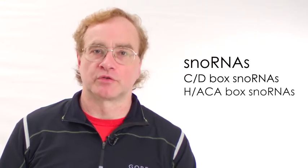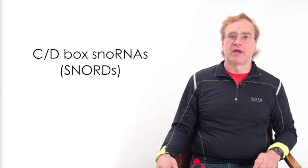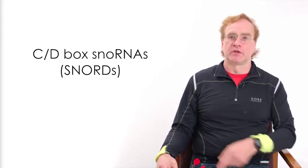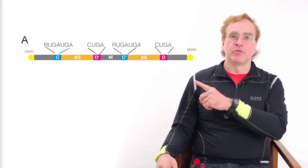SnoRNAs come in two flavors: C/D-box snoRNAs and HACA-box snoRNAs. Today we're going to focus on C/D-box snoRNAs. C/D-box snoRNAs or snords get their names from characteristic sequence elements known as the C and D boxes.